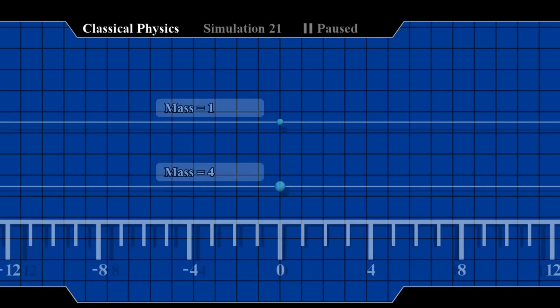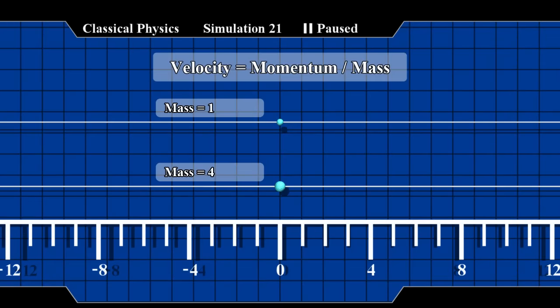And here's another way to look at it. Velocity is momentum divided by mass. Now we gave the two particles the same momentum, so the more massive particle is four times slower.